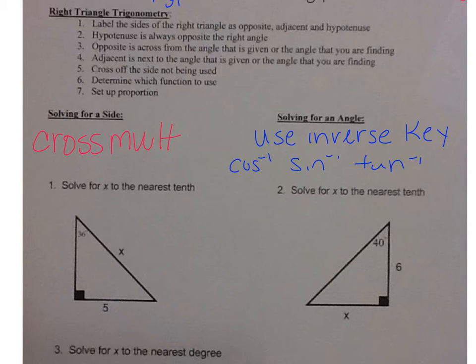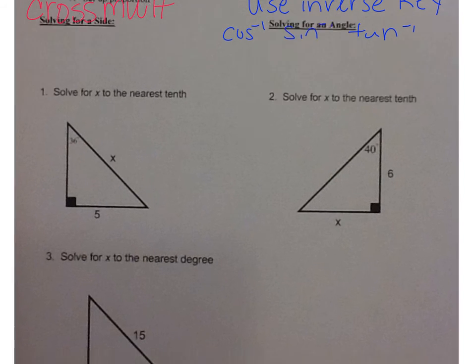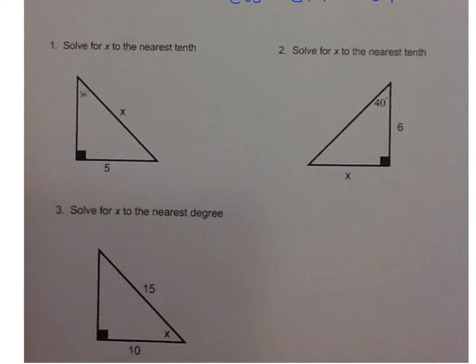All right, so let's take a look at number 1. It says to solve for x to the nearest tenth. So the first thing I'm going to do with this right triangle here is I'm going to label the sides. So I'm going to start with the hypotenuse because the hypotenuse is always opposite the right angle. So that means that x is the hypotenuse, so I put an H there. This is the angle that I have, which is 36. Go across from 36. That would be the opposite, so put an O. And the side that's next to it is the side that's touching the angle, and that's my adjacent. So the side that's not being used is the adjacent side.